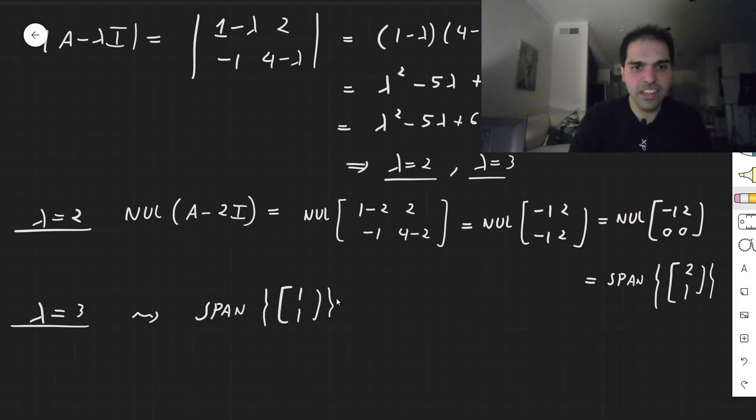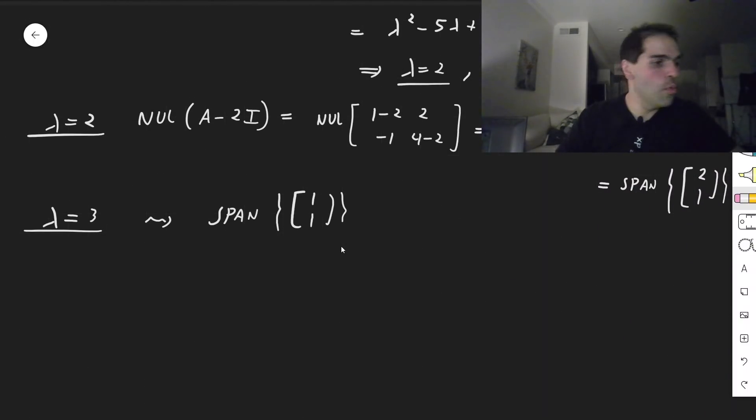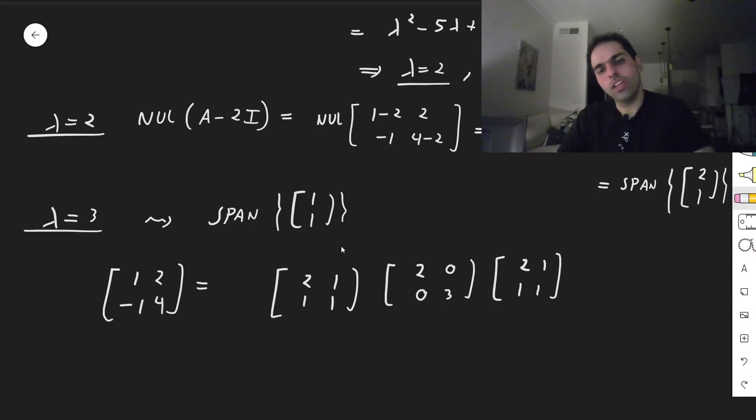Okay, so what does that tell you? It tells you that the original matrix [1, 2; -1, 4] is PDP inverse. So [2, 1; 1, 1]. So you put your eigenvectors together, then the eigenvalues, [2, 0; 0, 3], and [2, 1; 1, 1] inverse.